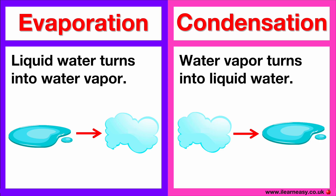Condensation is the process of water vapor turning into liquid water. This is a phase change that can occur regardless of the temperature. This occurs when water vapor cools down and comes into contact with a cooler surface.